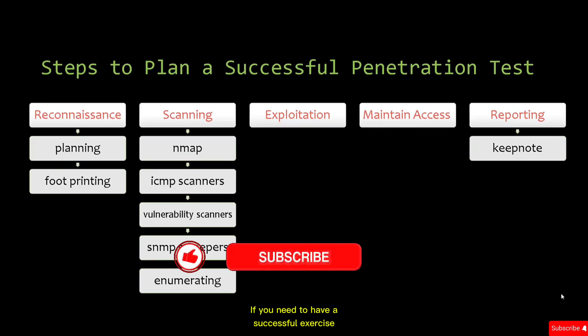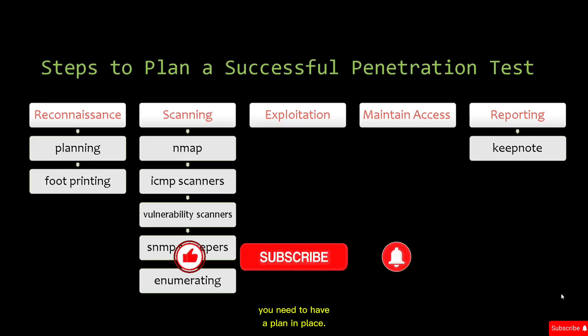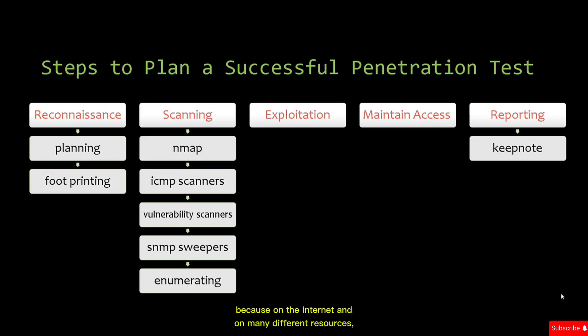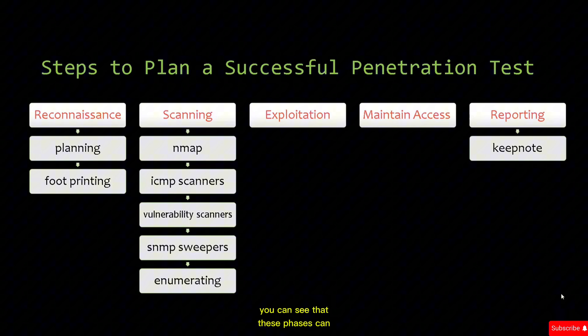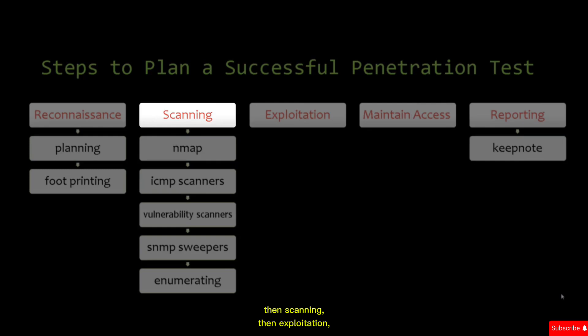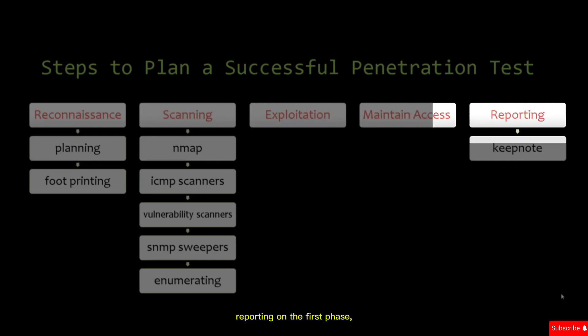If you need to have a successful exercise of penetration testing, you need to have a plan in place. We're going to talk about the phases of a successful penetration test. Generally there are five phases — though on the internet and many resources you can see five or six. The first phase is reconnaissance, then scanning, then exploitation, maintaining access, and finally reporting.